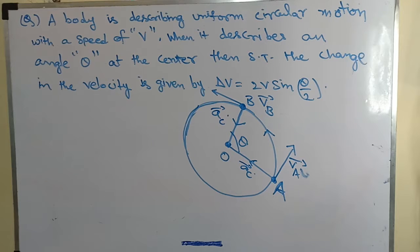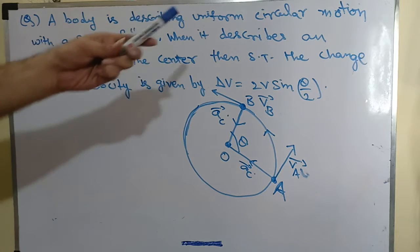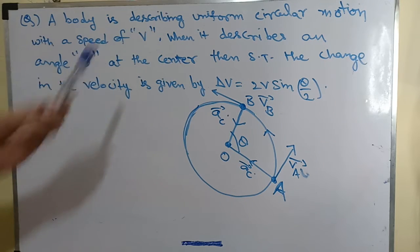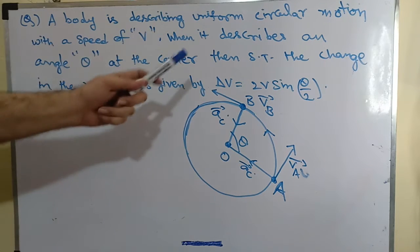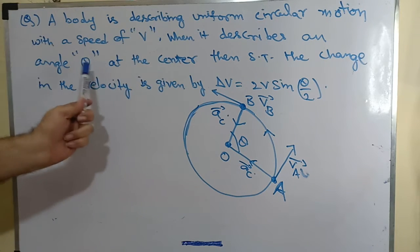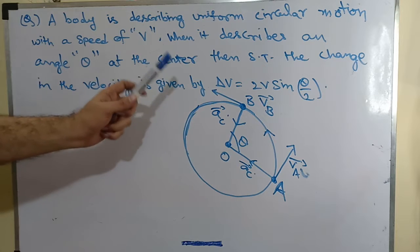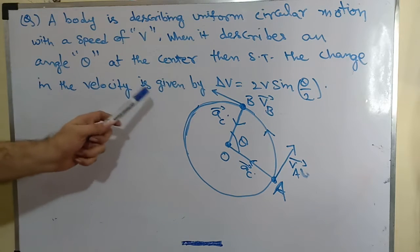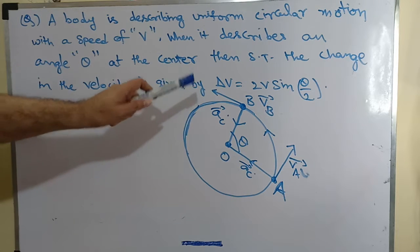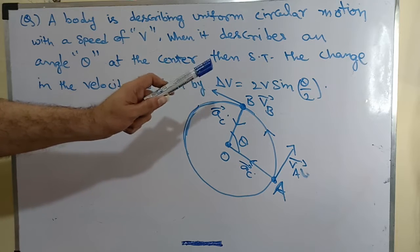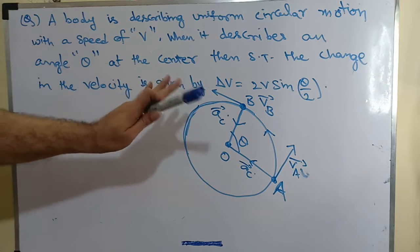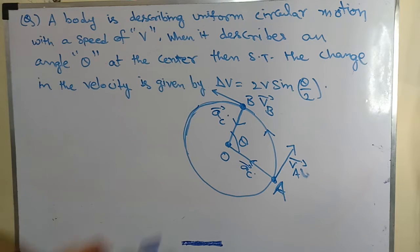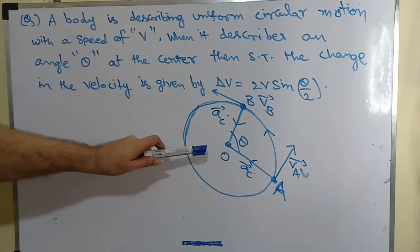Let us move on to the next question. A body is describing uniform circular motion with a speed of v. When it describes an angle theta at the center, show that the change in the velocity is given by delta v equals 2v sin(theta/2). You can refer to the figure below.